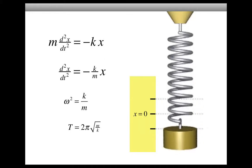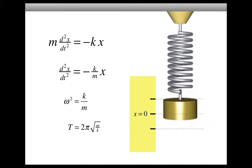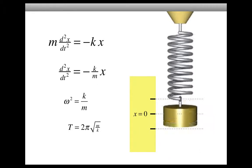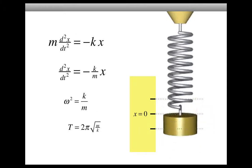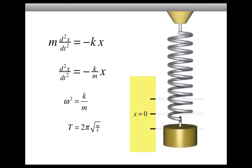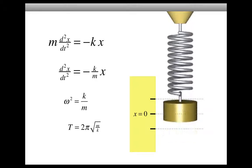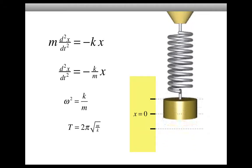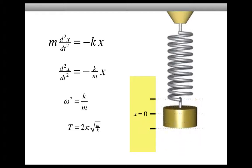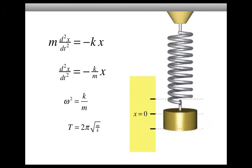We have found that the period for a mass oscillating on a vertical spring is exactly the same as the period for a mass oscillating on a horizontal spring — a little surprising, but that is the way it works out. That's it for the simple harmonic oscillator and the vertical spring. In the next video, I'll show you how to deal with the physical pendulum.